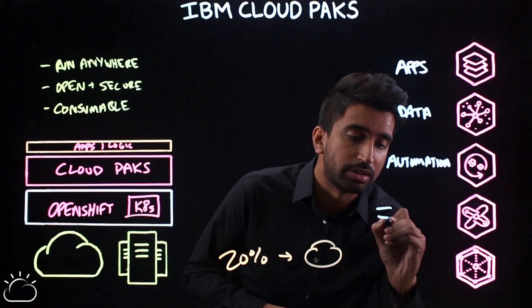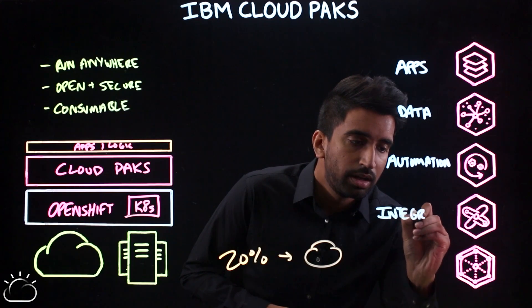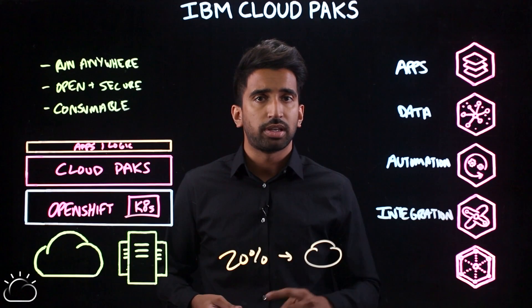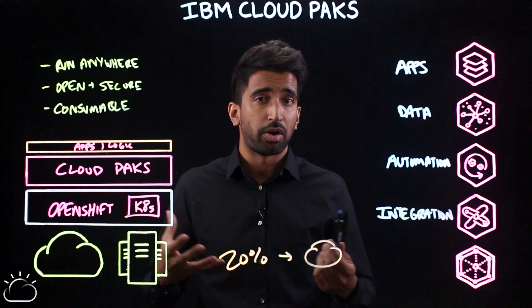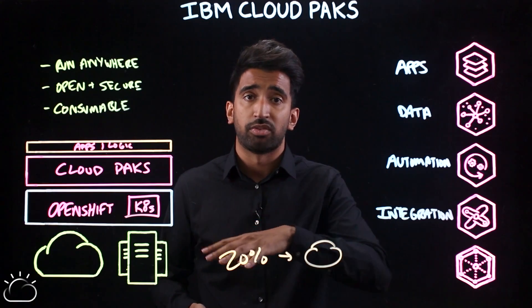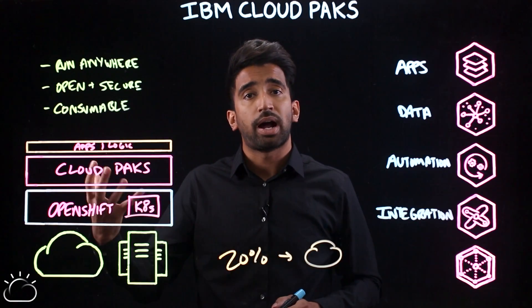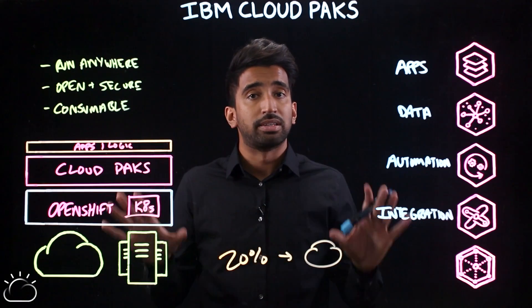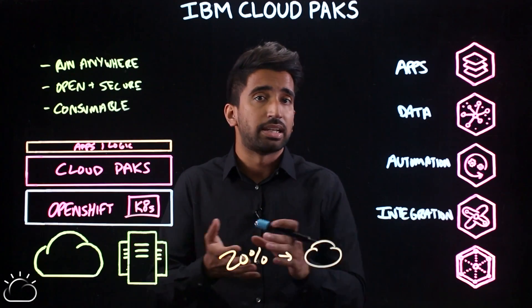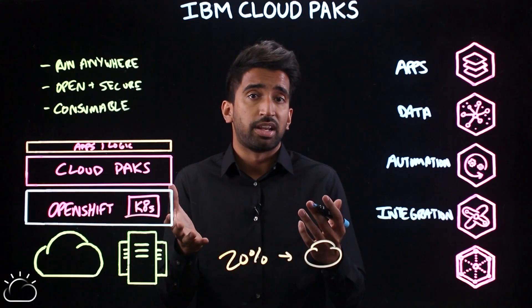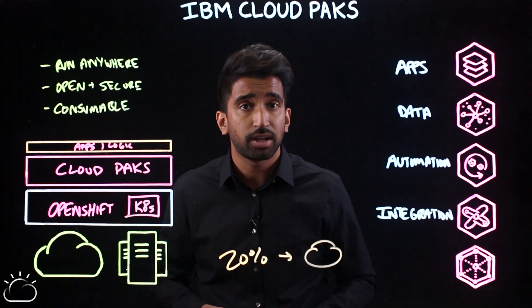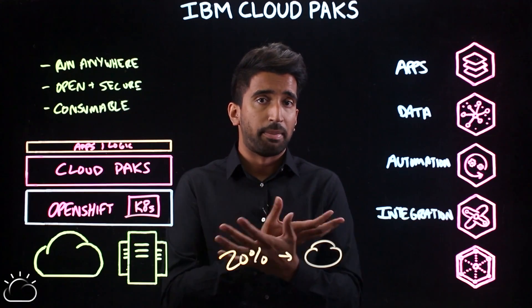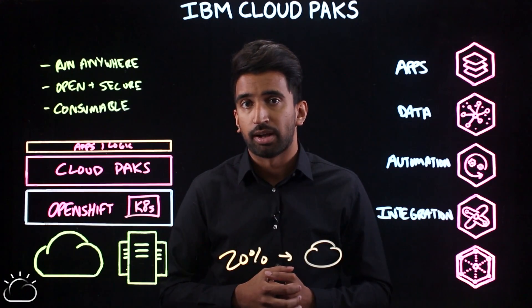Next, we have Cloud Pack for Integration. In previous videos, we've talked about this emergent pattern of applications following a hybrid cloud architecture — apps that are running legacy on-prem as well as newer apps running in the cloud. To get those disparate environments to work holistically, you may take advantage of APIs and API management, or maybe a faster protocol like messages with Kafka. When it comes to integrating these different solutions and having them work with each other, that's where Cloud Pack for Integration comes in.